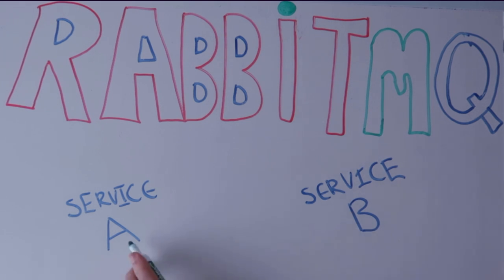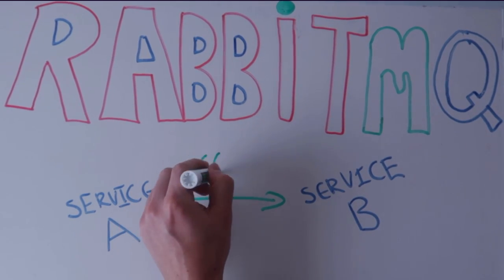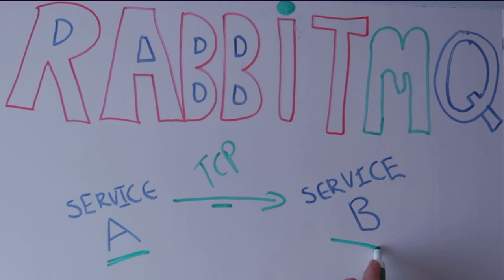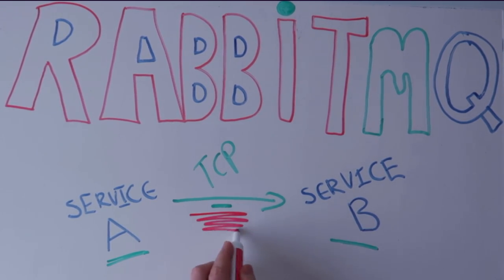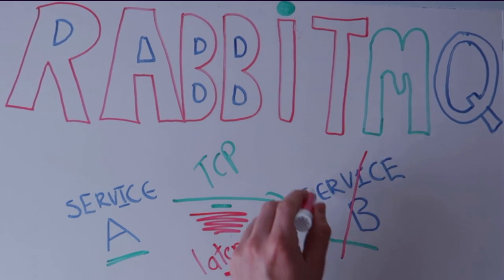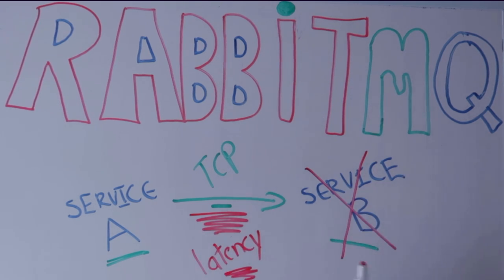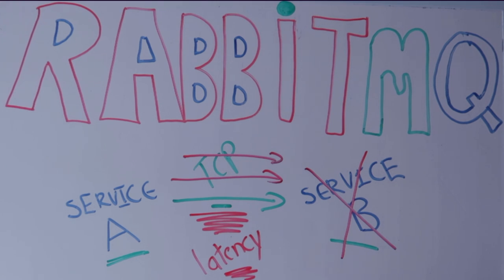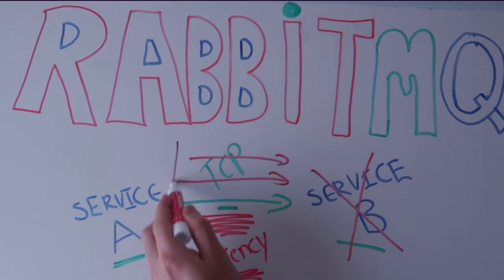Let's take a look at a basic microservice example of service-to-service communication. In this example, service A makes a call to service B, usually done over a TCP connection. This call is synchronous, meaning service A has to wait for service B to respond. If service B takes a long time to respond, this connection is potentially dragged out, adding latency. If service B crashes or fails, service A may have to retry multiple times.